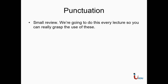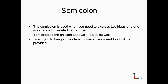Punctuation — a small review. We're going to make sure you understand punctuation properly, and we're going to go over new punctuation rules every single video. The semicolon — you guys haven't used this yet, and normally you won't have to. The semicolon is one of the more unused parts of the English language. A semicolon is used when you need to express two ideas, and one is separate but related to the other. For example: Tom ordered the chicken sandwich; Sally, as well. You put a semicolon, then the subject of the next sentence, then a comma. The semicolon replaces repeating the verb phrase — so instead of saying Sally ordered the chicken sandwich as well, you just write Sally, as well.